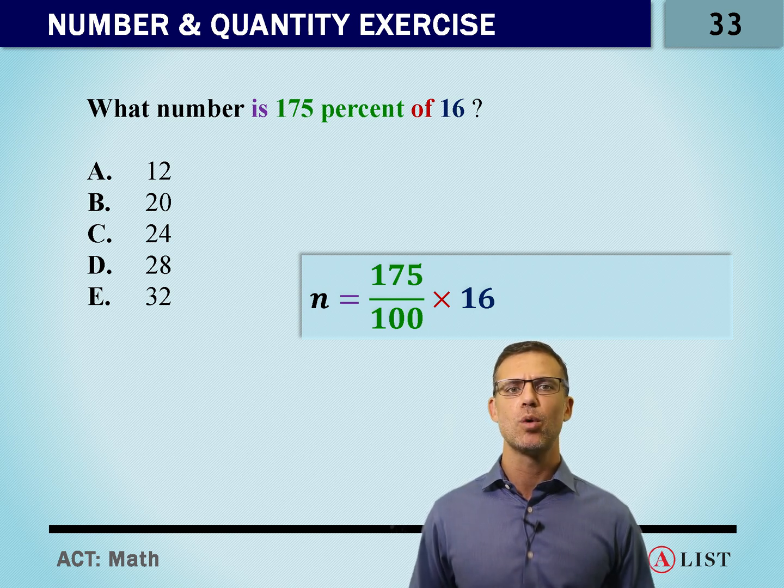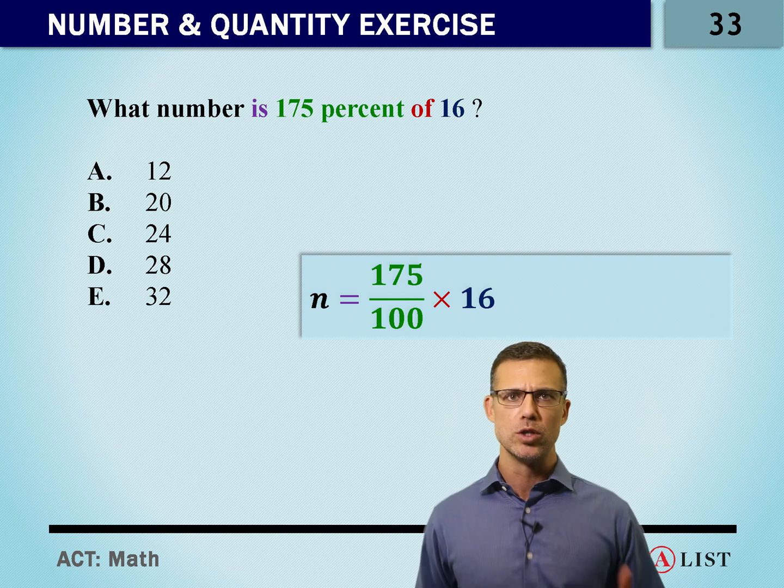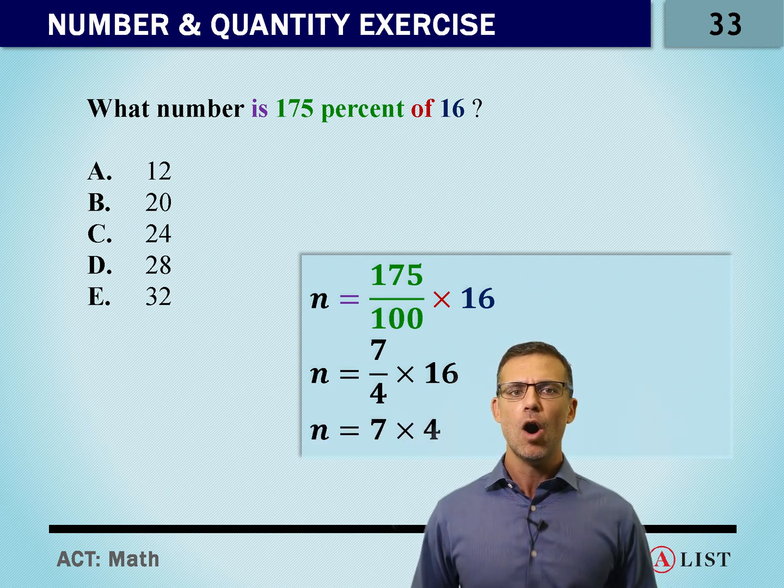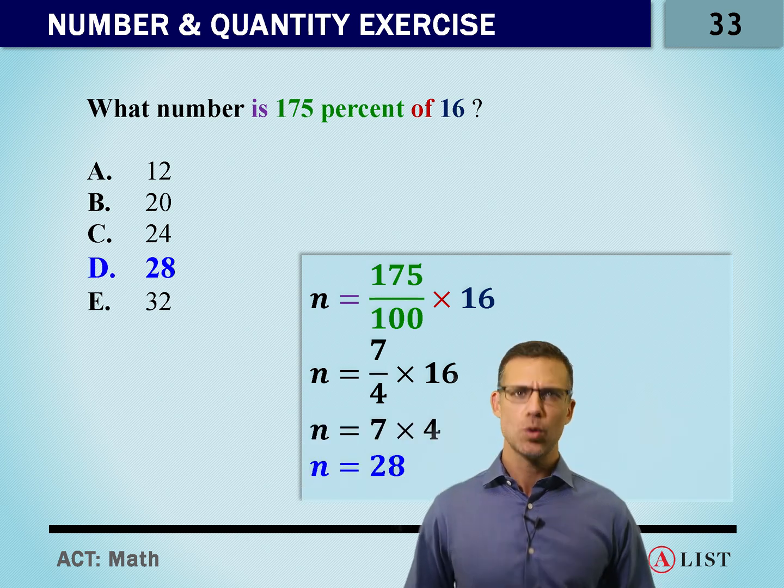This is a simple calculator question at this point. We can either reduce this without a calculator to 7 over 4 times 16, or we can put the whole mess in the calculator and hit enter. What do we get in the end? D, 28.